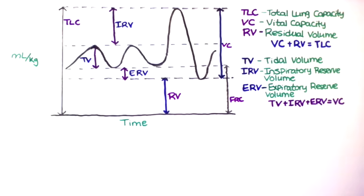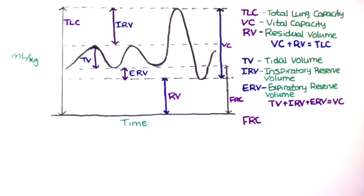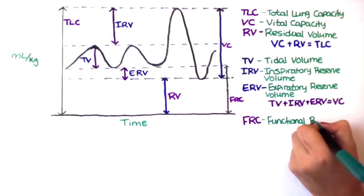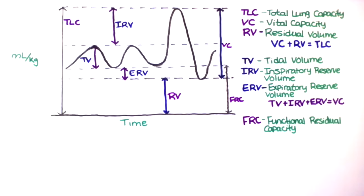FRC, or the functional residual capacity, is the amount of gas remaining in the lungs after a tidal expiration. Normally it is 40% of the total lung capacity.